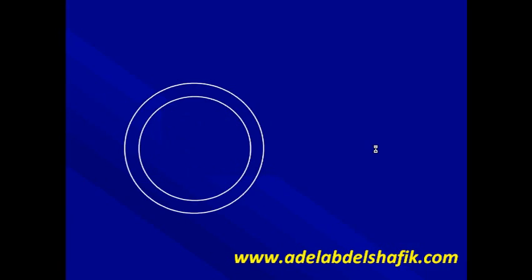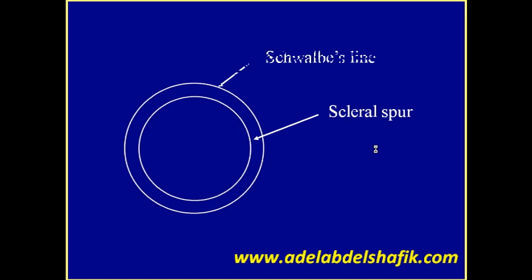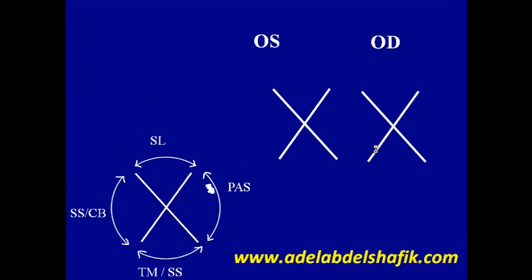For recording, a simple method uses two rings: the inner one represents the scleral spur and the outer one represents Schwalbe's line, so in between you have the trabecular meshwork. You then write your findings — for example, peripheral anterior synechiae here, trabecular meshwork seen, scleral spur seen, or ciliary body seen — just written down around the diagram.